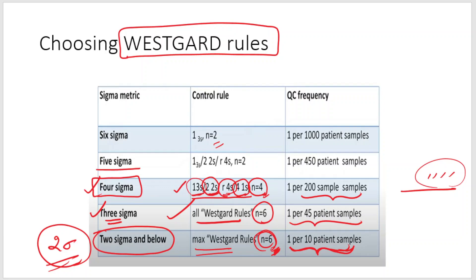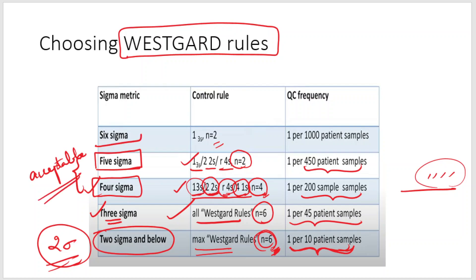For 5 sigma performance, on violation of 1:3S, 2:2S, or R:4S, you can run just 2 control levels — 2 controls per 450 patient samples. For 6 sigma performance, only a violation of 1:3S triggers action, and you run 2 controls per 1,000 patient samples. So as sigma performance increases, the frequency of QC runs decreases.